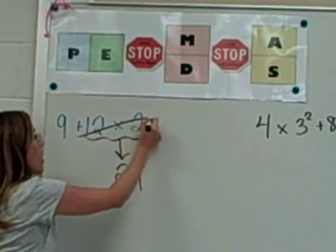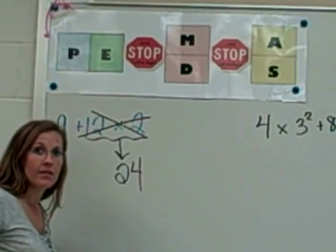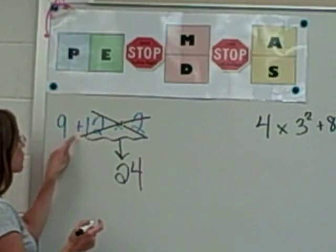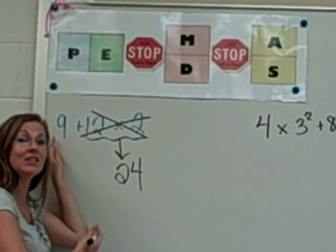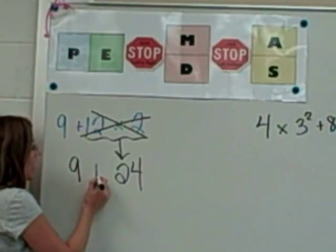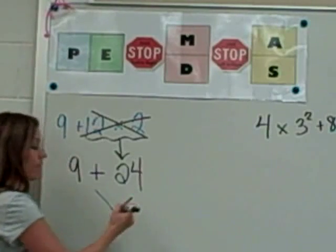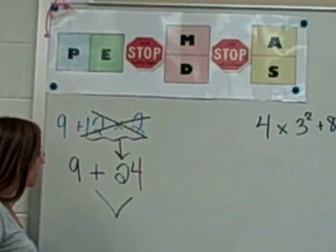I'm going to actually cross that out so that I don't accidentally do it again. Then I just need to bring down the rest of this problem because it's still a part of the problem. We still need to do that. So we are going to go ahead and add 9 to 24, and when you go ahead and you do that problem,